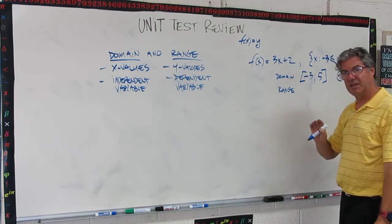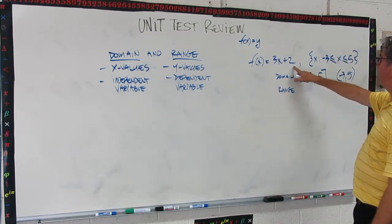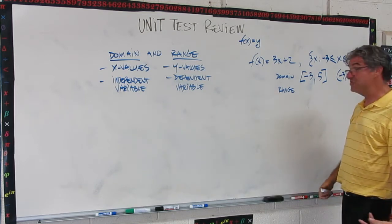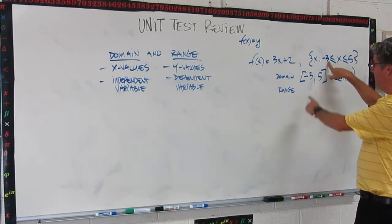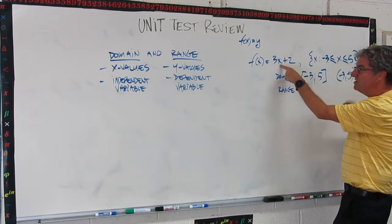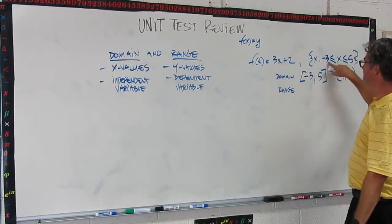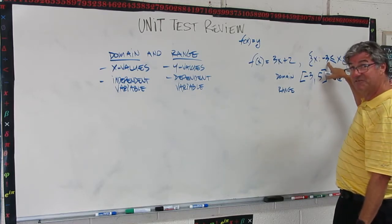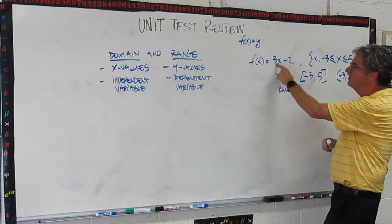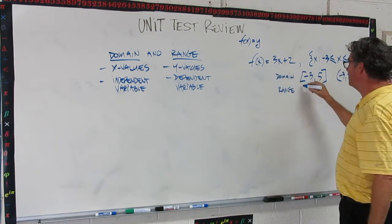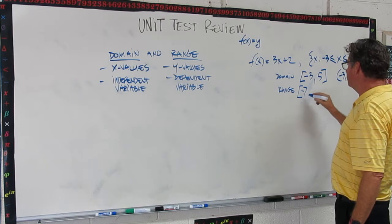Pause the video for a second and figure out what the range of this function would be over this domain. Okay, what you do is you just plug in the end members of the domain into the function, and that will spit out the range. So when x is minus 3, that's as small as this x value can get for this function, we do minus 3 times 3 is minus 9, plus 2 would end up with minus 7.